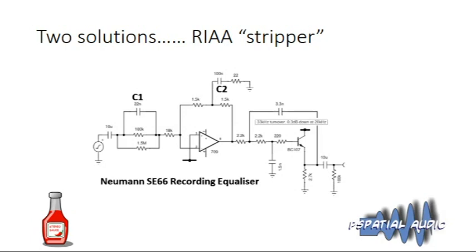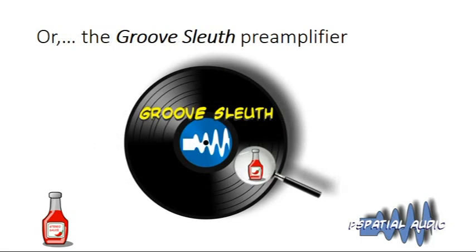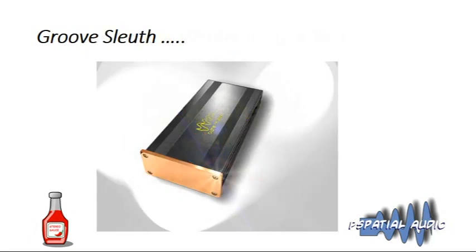So effectively you've got back to as near as possible to the signal coming directly out of the disc groove. But an even better way is to record directly what's really coming out of the groove — actually capturing the flat signal rather than having it equalized and then stripping off the equalization. We've developed our own hardware to enable this, which we call the Groove Sleuth preamplifier.